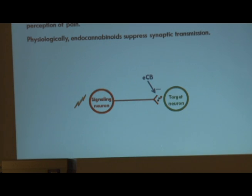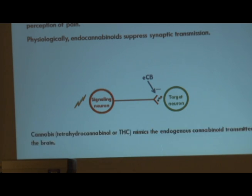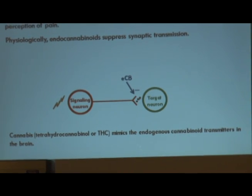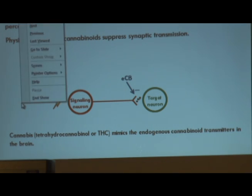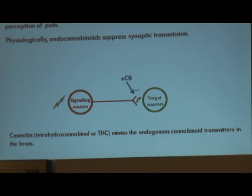Some of you may be thinking: endocannabinoids, cannabinoids — there's something about this word that rings a bell. And you would be right. The word you're thinking of is cannabis, or tetrahydrocannabinoid, which is the active ingredient in marijuana. When people use marijuana, the reason it has the effects it does is that it's mimicking the actual endogenous neurotransmitters we already have in our brain. As an employee of the state of South Dakota, I feel obligated to say I'm not advocating any therapeutic or non-therapeutic use of illegal substances. But I do think there are genuine uses that can come out of manipulating this endocannabinoid system in a very controlled manner.